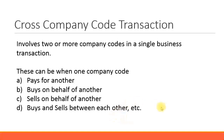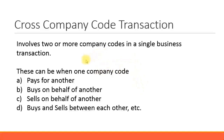If you sell one item to a customer or buy one item from a vendor, that is not a cross-company code transaction. Only when one company code is buying or selling on behalf of another company code is it considered a cross-company code transaction. Whenever two company codes in SAP interact with each other, it's called a cross-company code transaction.